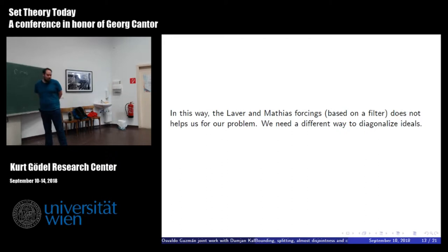So in order to solve our problem, it means that we cannot use Laver or we cannot use Mathias forcing for our, yeah, to solve our problem. So we need to find another way to diagonalize ideals. Now, if Laver failed us and Mathias failed us, what can we do? So we have Miller to help us.